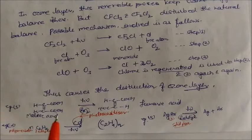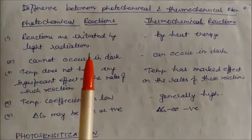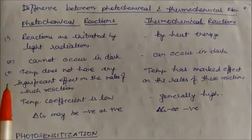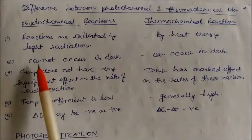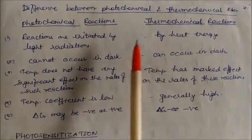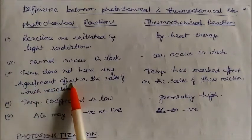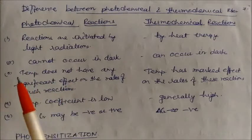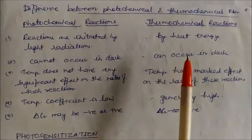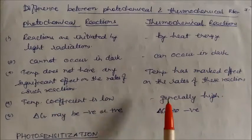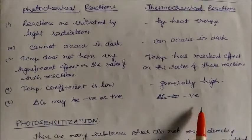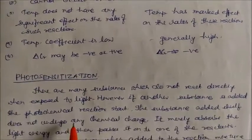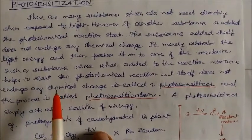Difference between photochemical and thermochemical reactions: Photochemical reactions are initiated by light radiation; thermochemical reactions are initiated by heat energy. Photochemical reactions cannot occur in dark; thermochemical reactions can. Temperature does not have significant effects on photochemical reaction rates (temperature independent); in thermochemical reactions, temperature plays a major role. Temperature coefficient is low for photochemical reactions and high for thermochemical reactions. Delta G may be negative or positive in photochemical reactions; it is always negative in thermochemical reactions.